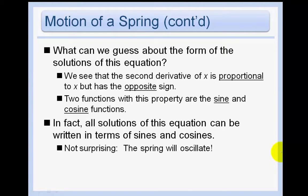This is a second order differential equation because it involves a second derivative. We can observe that the second derivative of x is proportional to x but has the opposite sign. Two functions with these properties are sine and cosine. In fact, all solutions of the equation can be written in terms of sines and cosines — not surprisingly, the spring will oscillate, which is exactly what sine and cosine look like.